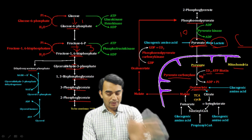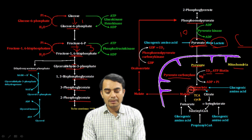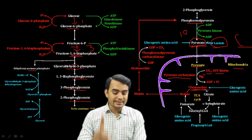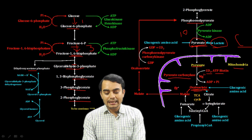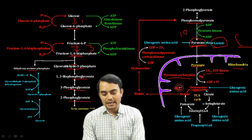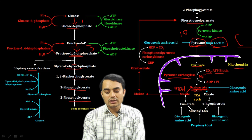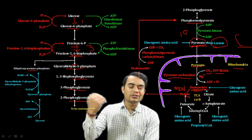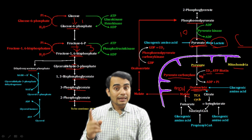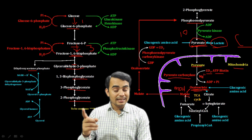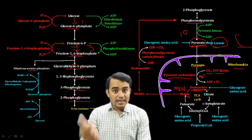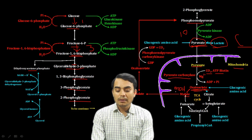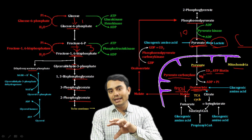Oxaloacetate is a very important compound, also seen in the TCA cycle. This oxaloacetate, by the enzyme malate dehydrogenase, is converted into malate. This is the reverse of the TCA cycle — in TCA, malate forms oxaloacetate, but here oxaloacetate is converted to malate.